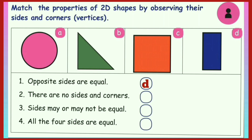Second one: there are no sides and corners. The answer is A, circle, which has no sides and no corners. Third one: sides may or may not be equal. The answer is B, triangle, which has 3 sides that may or may not be equal. Fourth one: all 4 sides are equal. The remaining option is C, square, which has 4 sides, 4 corners and all 4 sides are equal. So the answer is C.